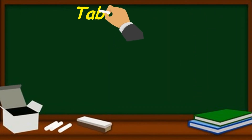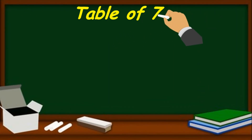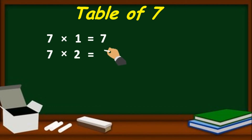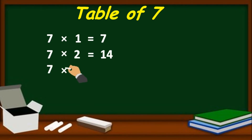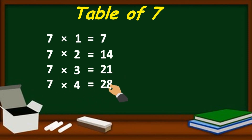Table of 7. 7 one's are 7, 7 two's are 14, 7 three's are 21, 7 four's are 28.